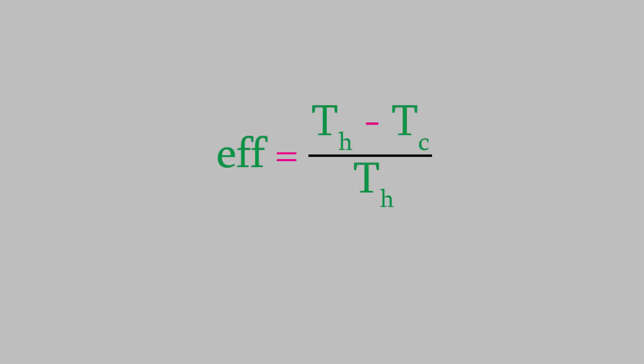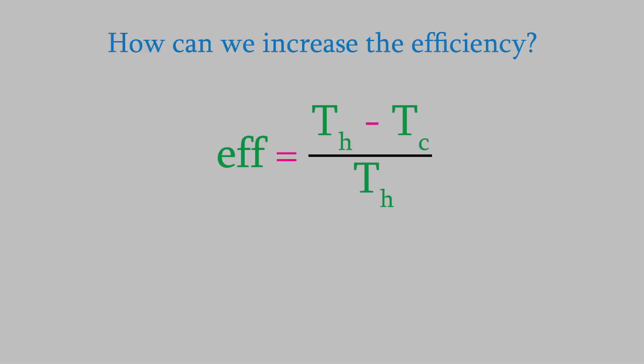Let's look at this equation a little more deeply. Suppose we wanted to build an engine that was more efficient. This equation shows us that there are two ways to increase the efficiency. First, we could increase the numerator — that means we'd need to increase the difference between the temperatures of the two reservoirs.